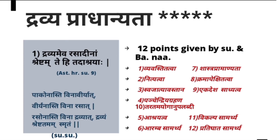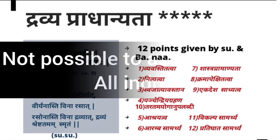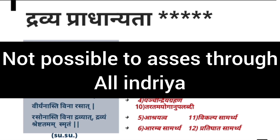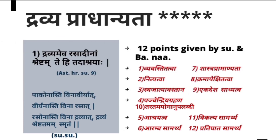But regarding Rasa, Guna, Virya, Vipaka — we can only taste Rasa through Rasanendriya; we cannot touch Gunas. So Dravya is Panchendriya Grahana but Gunas are not. The fifth point is Ashrayatva — as already explained, Dravya is the Ashraya and Rasa Panchakas are the Ashrayibhutas, making Dravya Pradhana. The sixth point is Arambha Samarthya — when initiating treatment, we specify the Dravya: if Vamana is needed, give Madhanaphala; if Virechana is needed, give Trivrit.